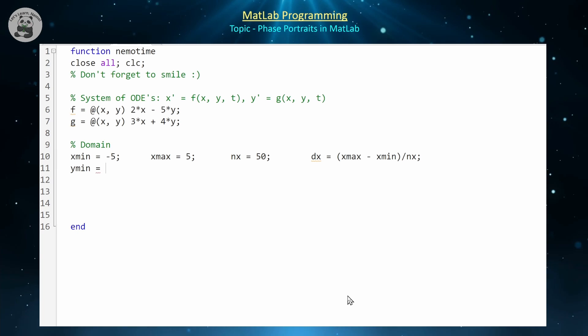I'm going to do a symmetric grid for y since I know (0,0) is in the middle, so I'm going to do ymin equals minus 5 and then ymax will be equal to positive 5. Let's do the same number of points in that direction, 50, and let dy be equal to ymax minus ymin divided by ny.